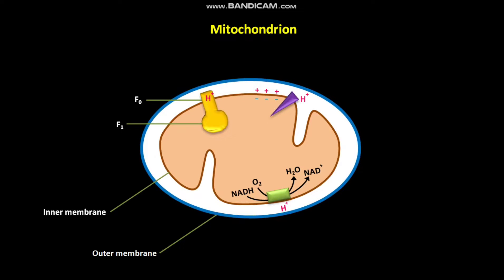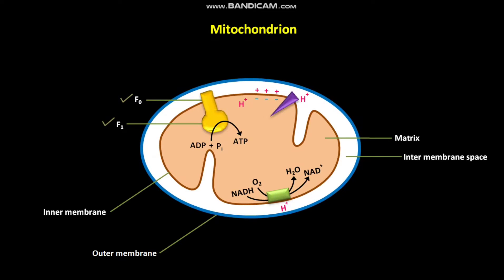H+ ions move into the matrix from the intermembrane space of the mitochondrion through the F0 portion of the F0-F1 complex. This H+ ion movement is coupled to ATP synthesis in the F0-F1 complex. During ATP synthesis in the F1 portion, in a biochemical reaction, ADP and Pi are converted into ATP.